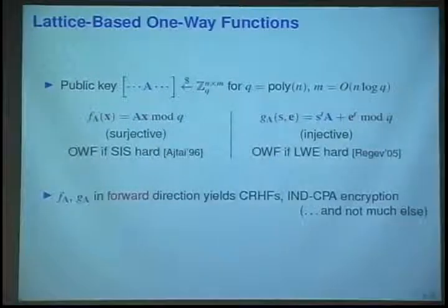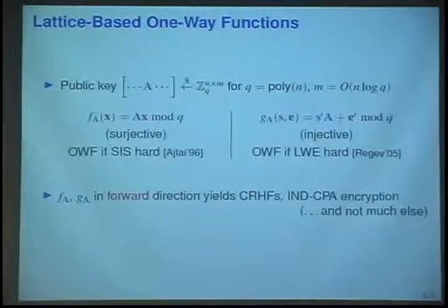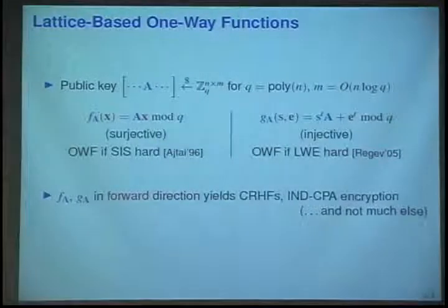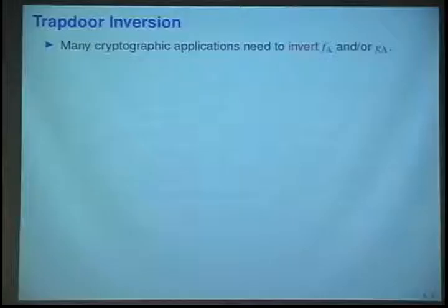You can do a few things with these two functions if you only use them in the forward direction. You can do collision-resistant hash functions, and you can do CPA secure encryption. That includes fully homomorphic encryption now, but it's still only CPA secure. You can't do much else if you only use them in the forward direction.